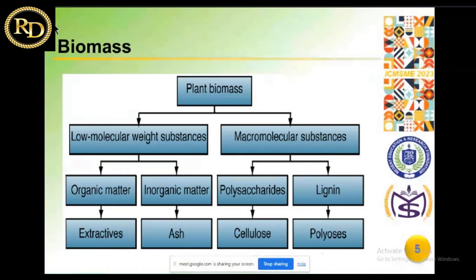This is the classification of plant biomass. Plant biomass is classified mainly into two categories: low molecular and macromolecular substances. There are several components: organic matter, inorganic matter, lignin, ash components, celluloses, and polycelluloses.